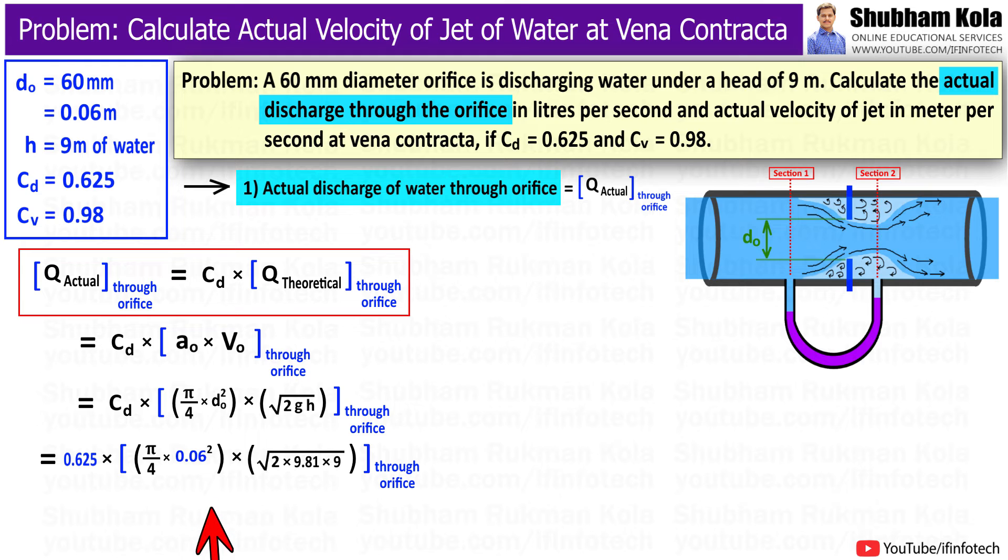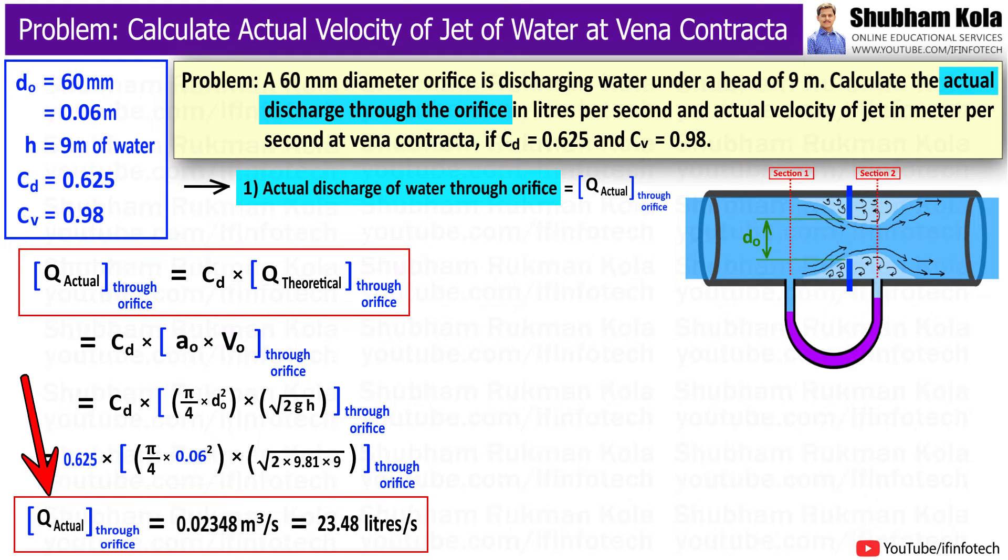Therefore, by calculating this entire expression, the actual discharge of water flowing through the orifice equals 0.02348 m³/s, which is equal to 23.48 liters per second.